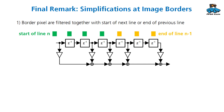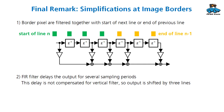Before we have a look at the implementation there is one final remark. For the image borders the design uses a simplification to keep the design easier, and this simplification has two effects. First, the border pixels are filtered together with the start of one line or the end of the previous line, so end of line and start of line are mixed. Second, the FIR filter delays the output for several sampling cycles and this delay is not compensated for the vertical filter, so the output is shifted by three lines. This is done to make the design easier to understand, and it is also an exercise so that you can fix both simplifications.